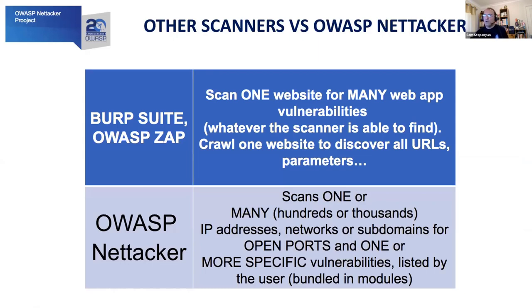Tools like Burp or OWASP ZAP will go and crawl one website to discover all URLs, all parameters, all forms, and all buttons, try to click on all the links, and then see if there are any vulnerabilities. OWASP NetTacker doesn't work like that. It doesn't scan just one website — it scans one or many, and that can be hundreds or thousands of IP addresses, networks, or subdomains. What is it scanning them for? For open ports, or one or more specific vulnerabilities listed by the user. These are basically what our modules are, and you can bundle the modules in a profile to search for specific things.